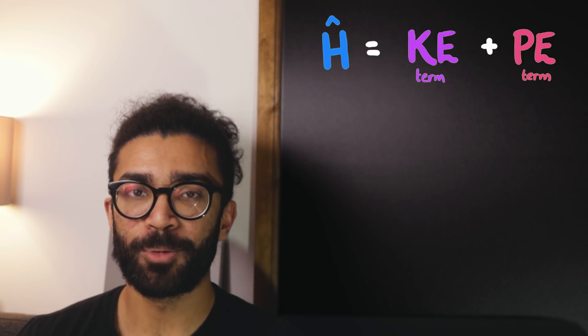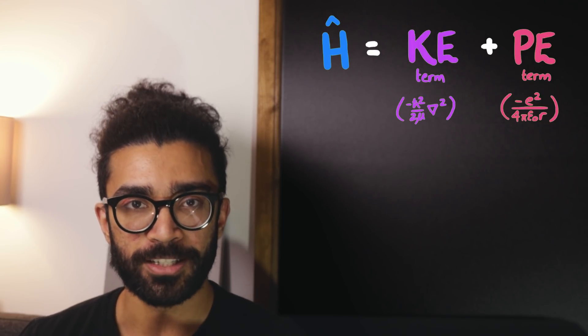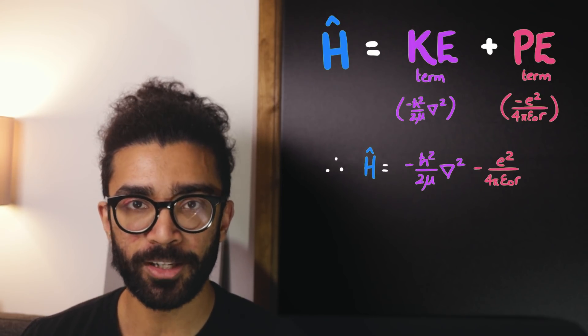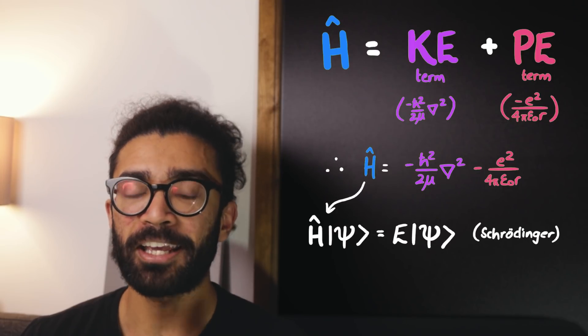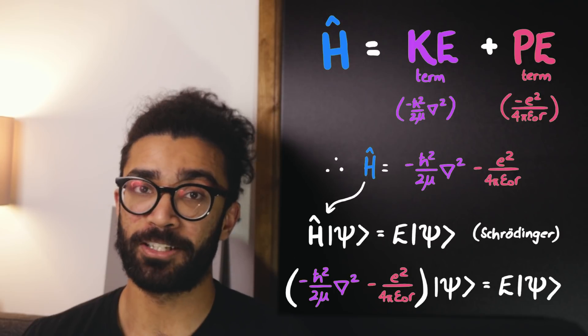And at this point, we've considered both the kinetic energy and the potential energy of our system. We can take these two quantities and plug them into a Hamiltonian, stick the Hamiltonian back into a Schrödinger equation, and then do some maths to try and find something out.